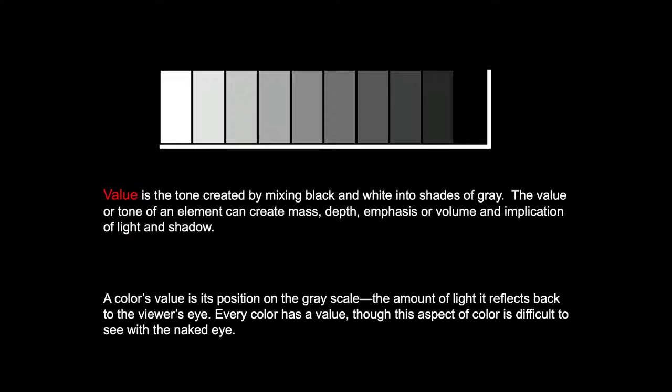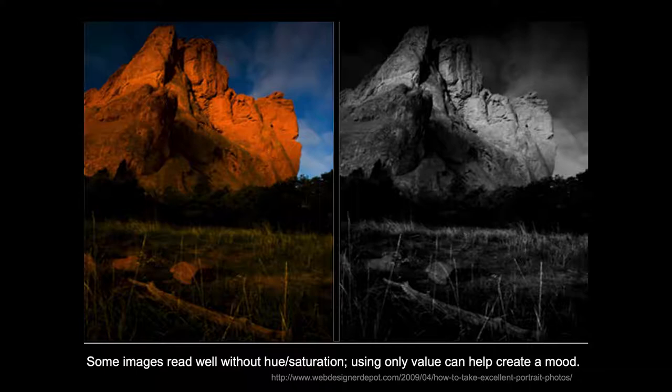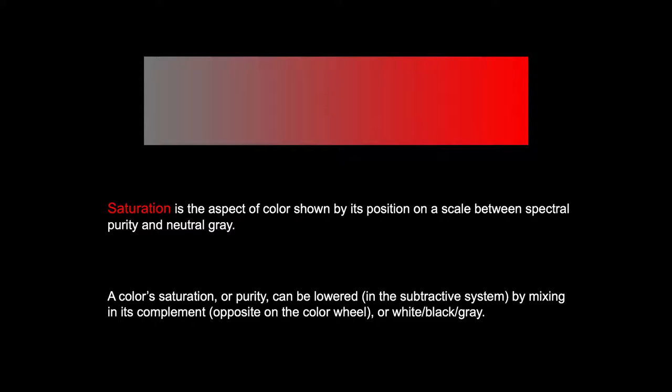We can sometimes sense what the value of a color is by squinting at it through our closed eyelashes, or by looking at it in very low light — in that situation you'll see the world almost as if it were in black and white. You can prove that by how difficult it is to match your socks if you get dressed in the dark. Some images read well in value only without any hue or saturation, but often changing an image from full color to simply reading in value really changes its mood.